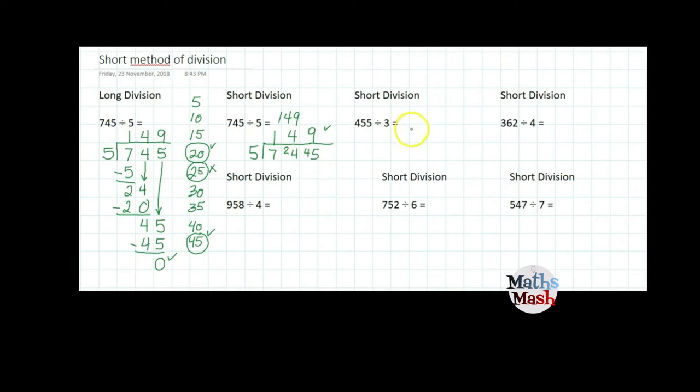Alright let's have a look at the next one. 455 divided by 3. I draw my house. This time I'm putting my divisor on the outside. My dividend is in the house. And how many sets of 3 in 4? That's 1 with 1 left over. That makes 15.